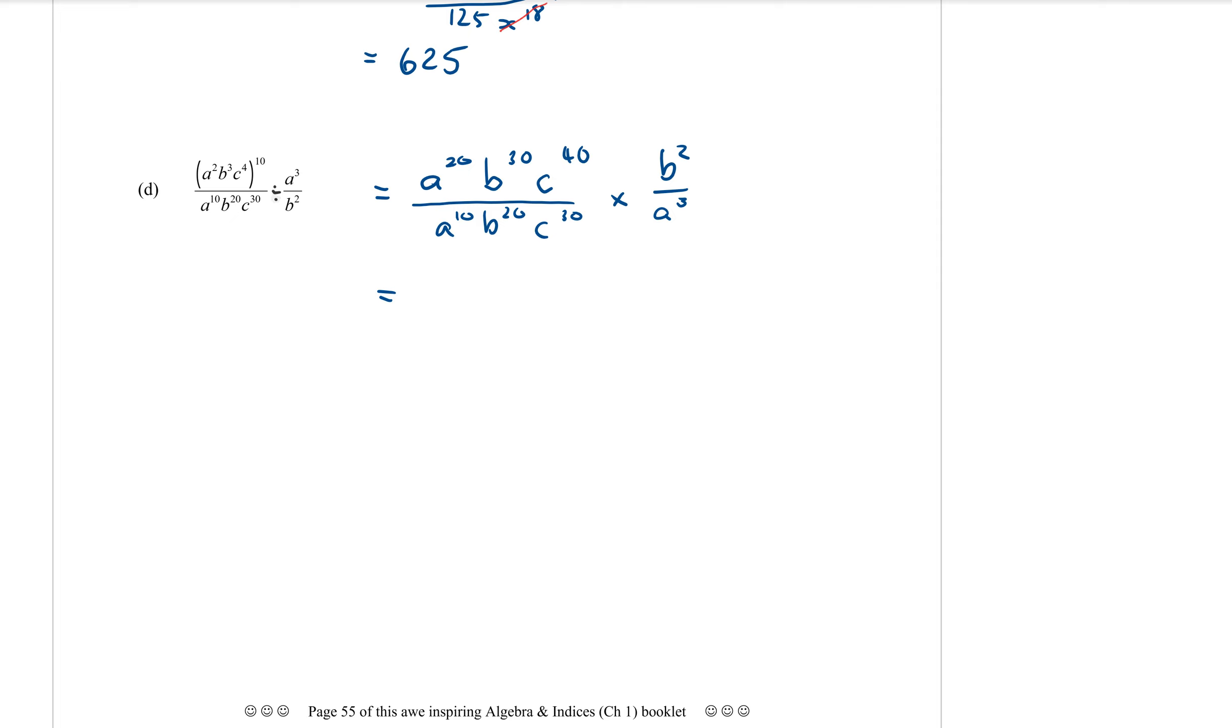Now, there's only Bs that can be collected up. The A and the C is going to stay the same. I have A to the 20. The Bs, when they're multiplied, the powers are added. So 30 plus 2 makes 32. The C is not going to change. On the bottom, I'm multiplying my extra A cubed into here. So that will be A to the 13, adding those powers together. The B to the 20 and the C to the 30 are not going to change.